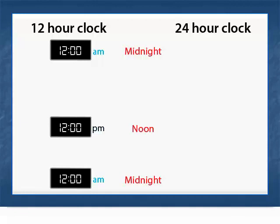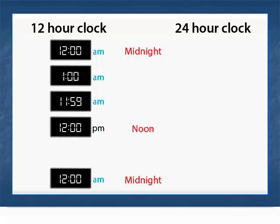When you tell time using a 12-hour digital clock, you must tell us whether it is in the morning, afternoon, or evening. Time in the morning, before noon, is a.m. time. Time in the afternoon and evening is p.m. time.